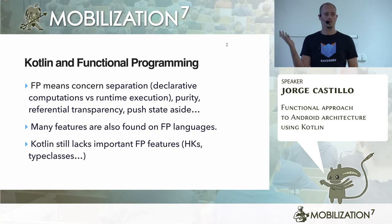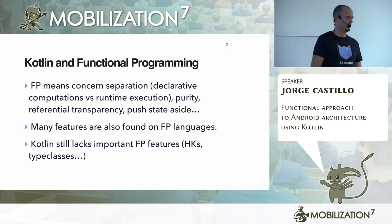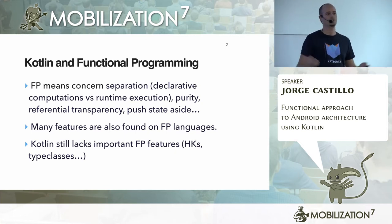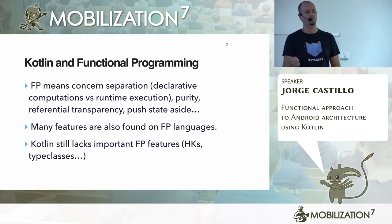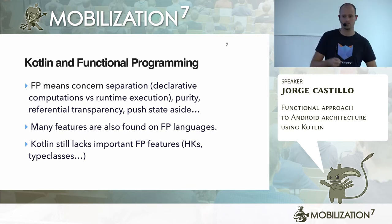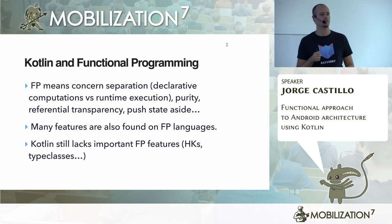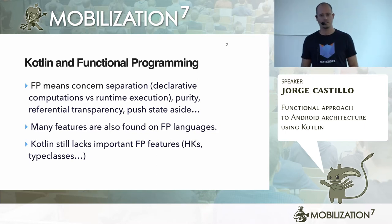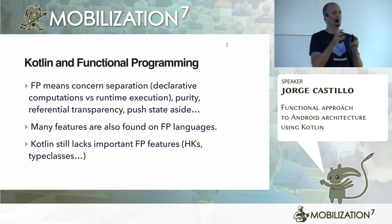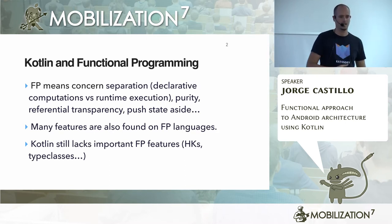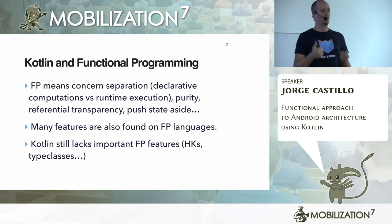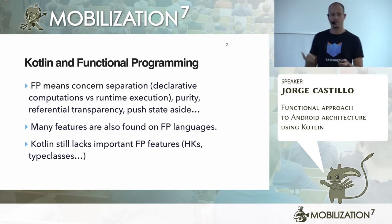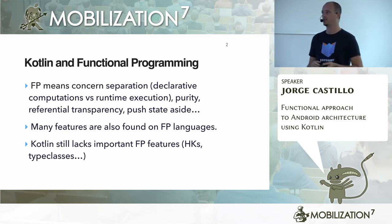We also have purity, which is about: if I call a function 1,000 times and I pass the same parameter values every single time, I should get the same result every single time. That means the function is not doing any side effects, anything behind the scenes. It's just taking its parameters, playing with them, and providing a result. That means determinism — predictability inside our code. We don't really want to have side effects.